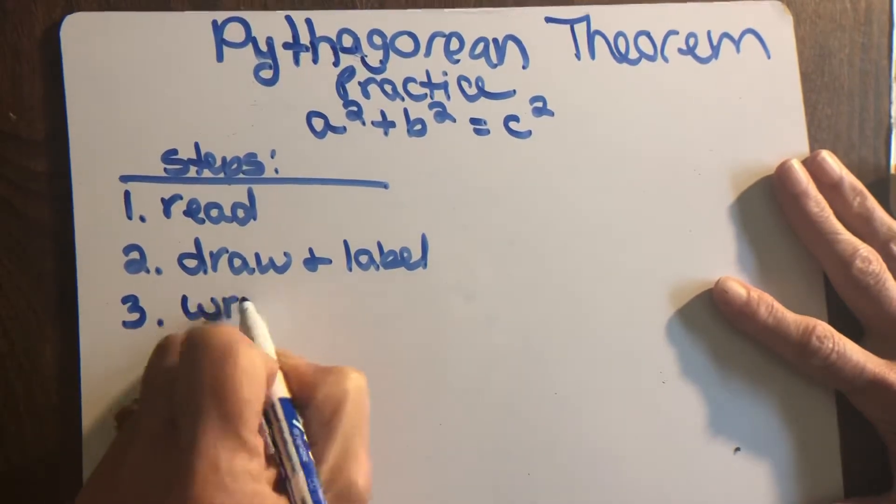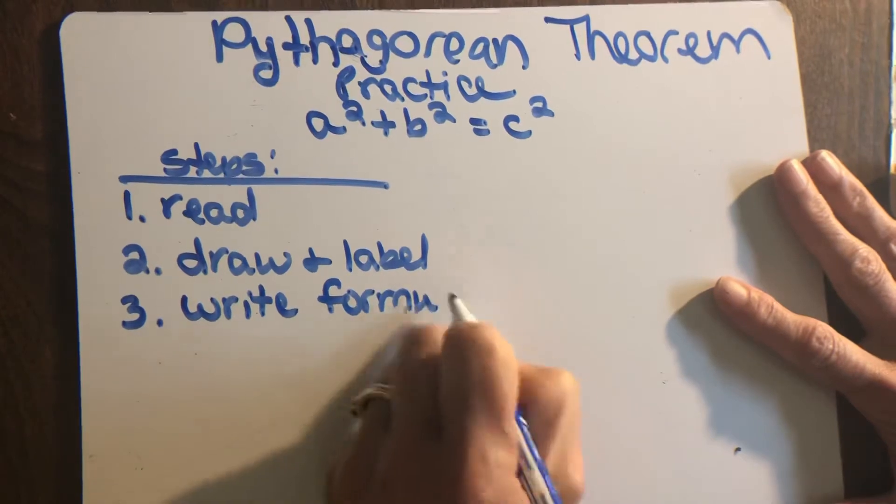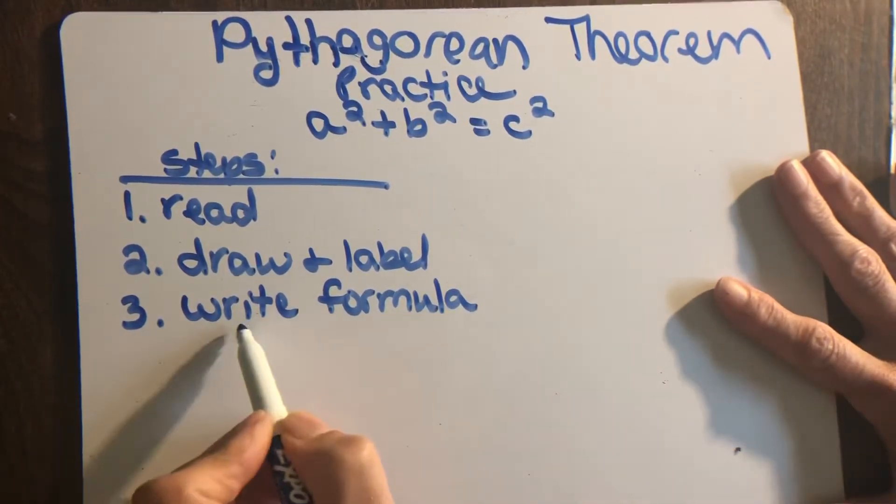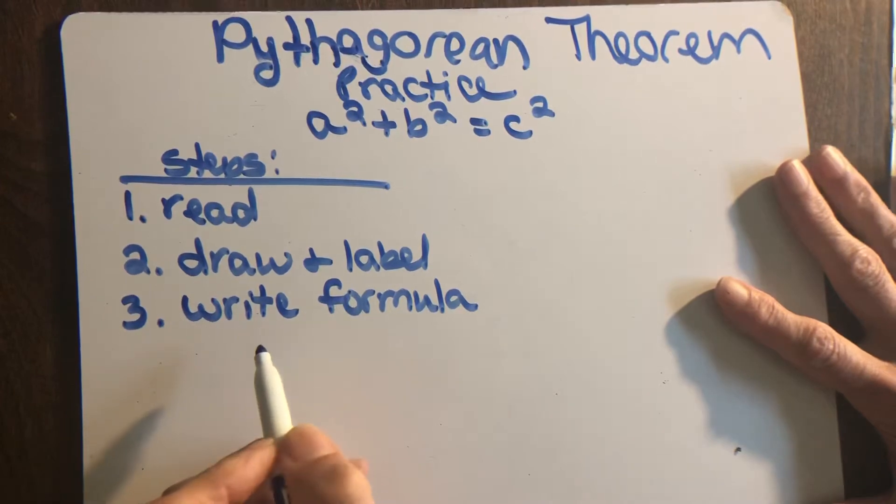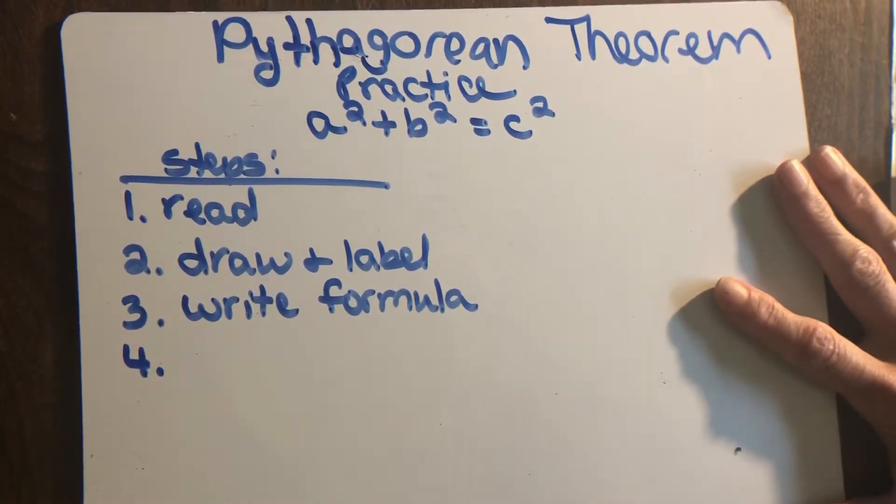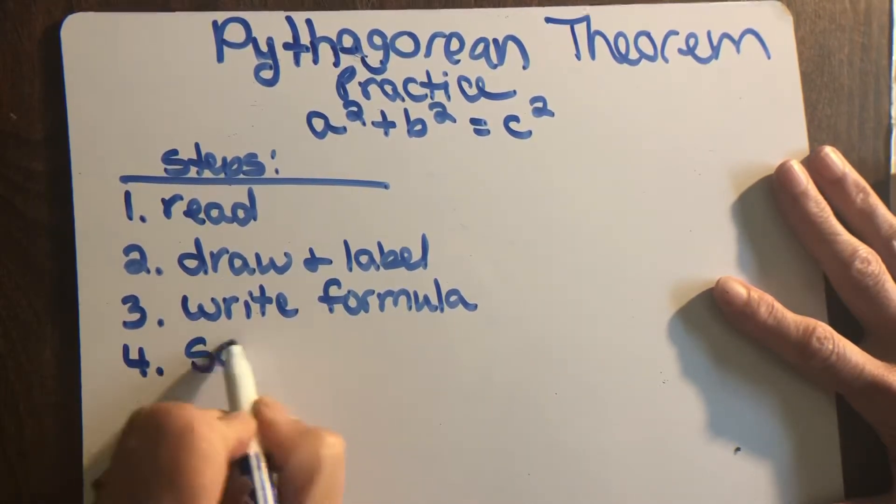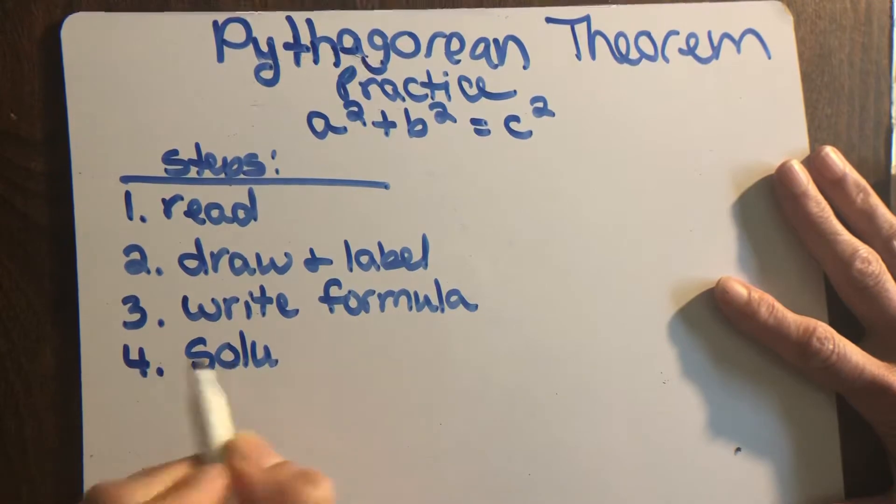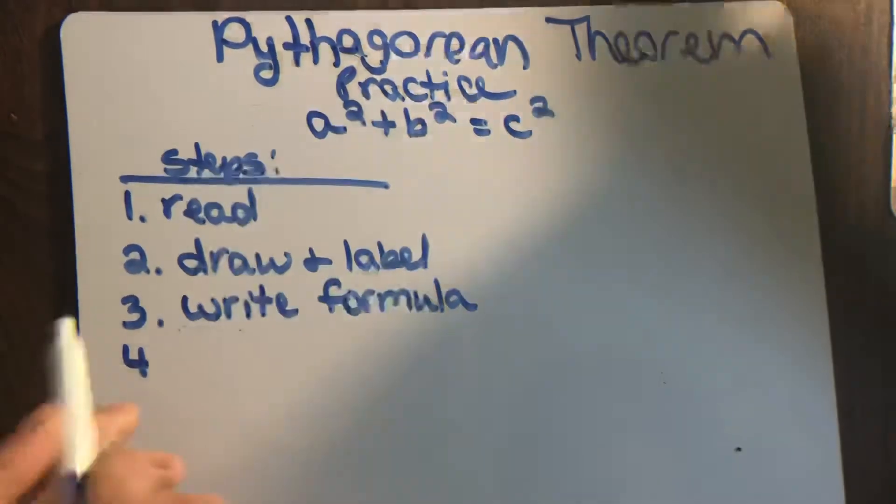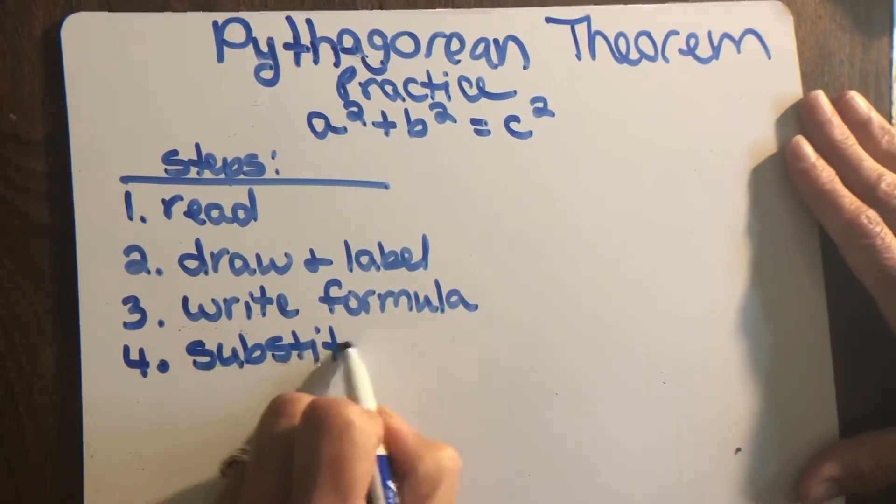Then you're going to write your formula, and our formula for this problem is a squared plus b squared equals c squared. You're going to write that down every time you do a problem. Yes, I know it's a lot of writing, but that's just where you are right now.